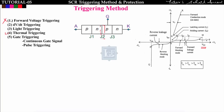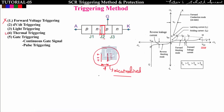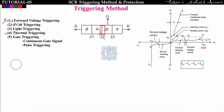The fourth method is thermal triggering, which is similar to light triggering. We increase the temperature of junction J2. With increasing temperature, there is movement of electrons and holes which neutralizes the stored charge carriers across junction J2, which again turns on the SCR.